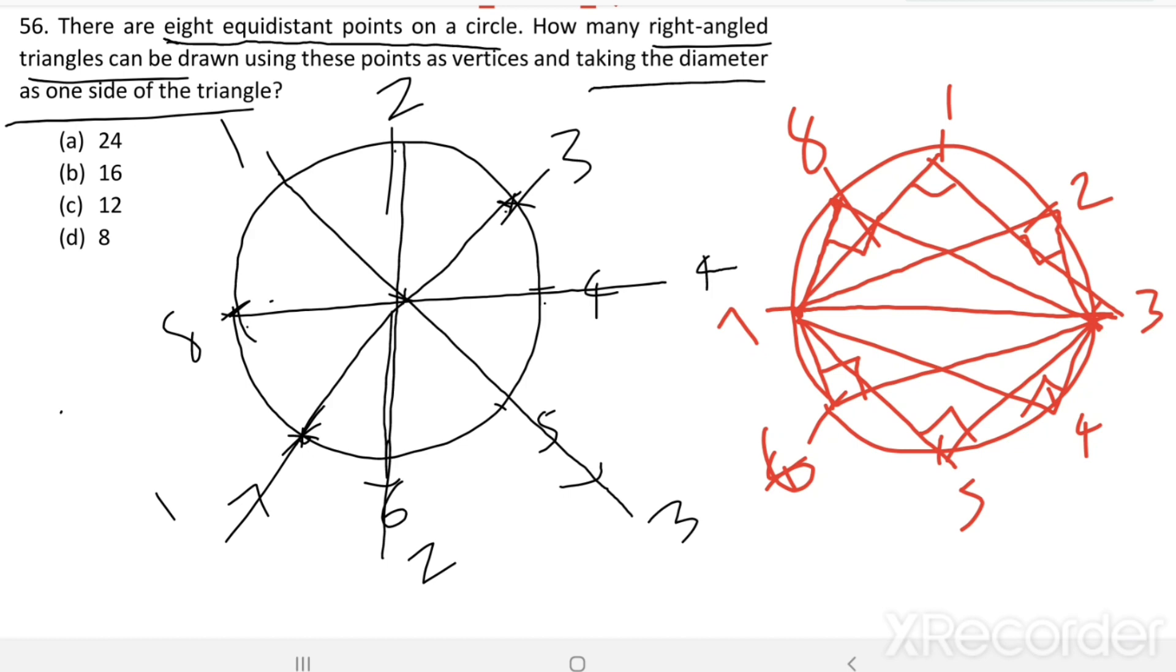So, all these are right-angled triangles. From one diameter, using other points as the third vertex, we got six right-angled triangles.